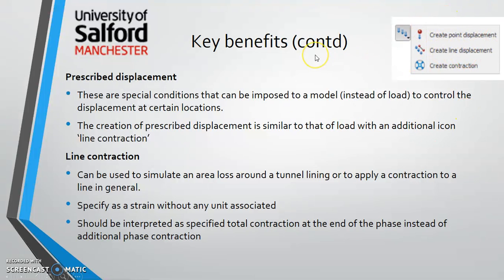Prescribed displacement controls the displacement at a certain location. Unlike loading, using displacement will not give you realistic behavior of your soil under loading — it only controls displacement within your sample. There is also a third icon to create a contraction, which is used when you have a tunnel and want to simulate area loss around the tunnel lining or to apply contraction to a line.